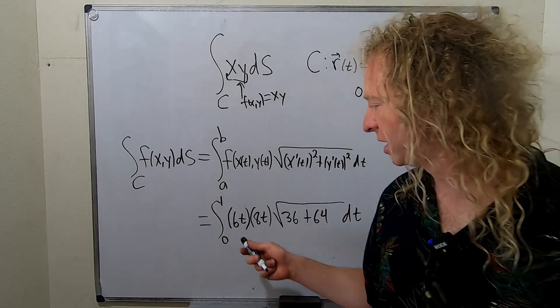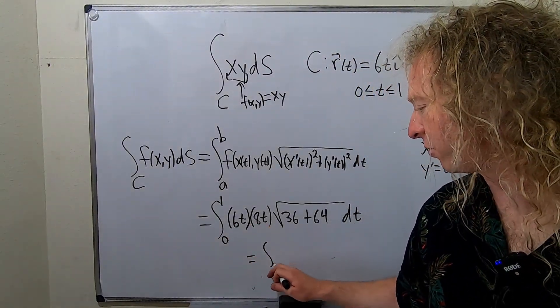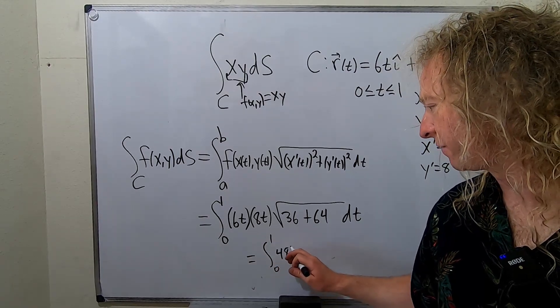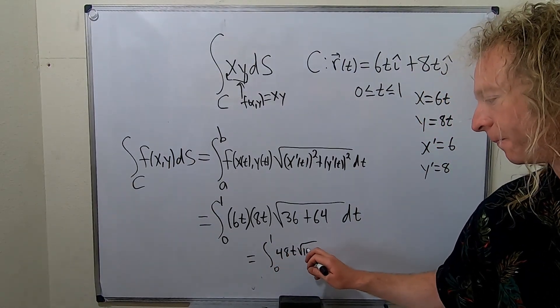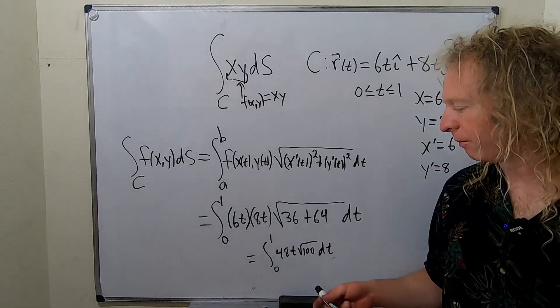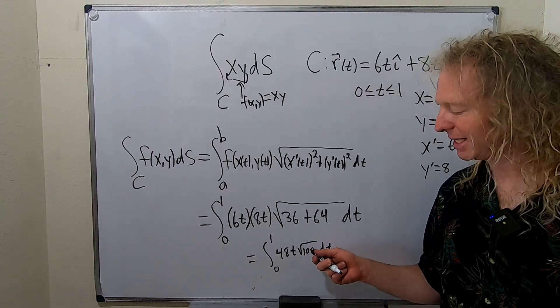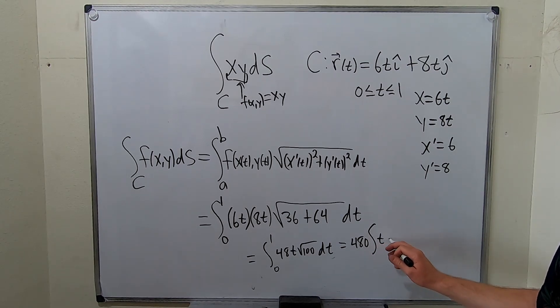Really nice. Really, really nice. 6 times 8 is 48. So we have the definite integral from 0 to 1 of 48t. This is 100, so square root of 100 dt. Let's keep going. Square root of 100 is 10. 10 times 48 is 480. This is 480t dt 0 to 1.